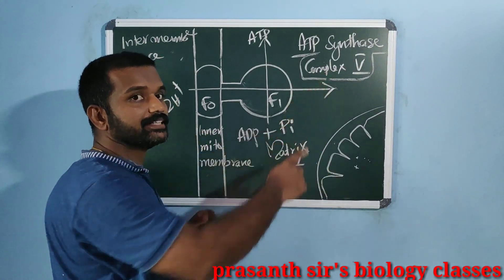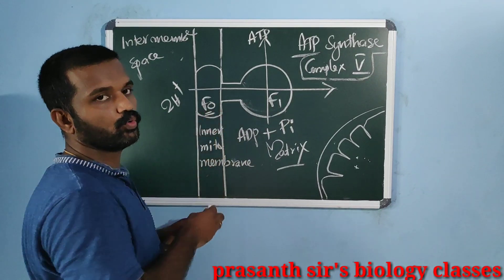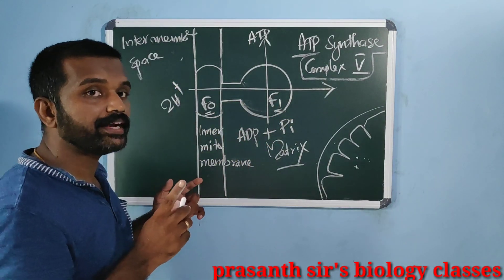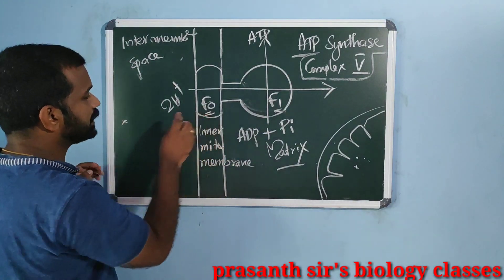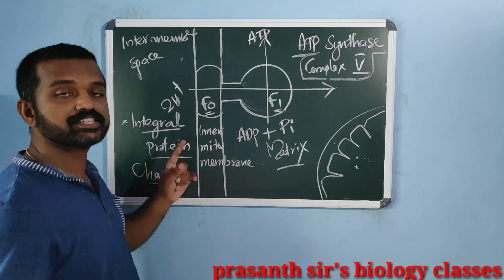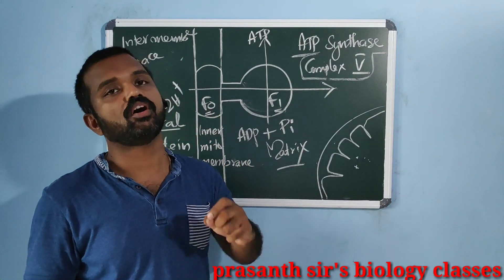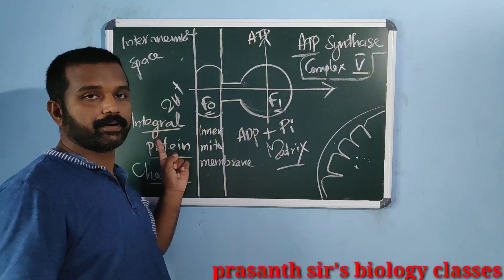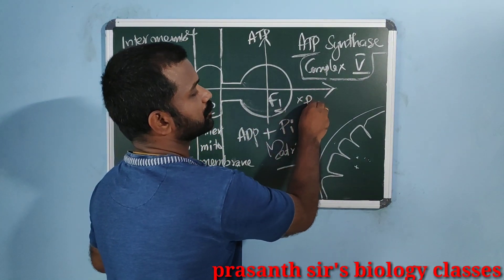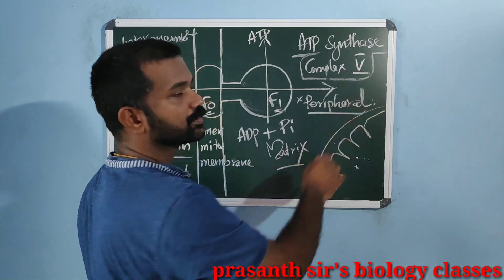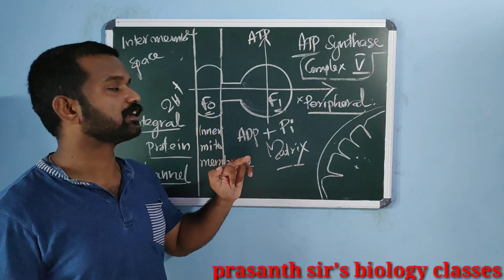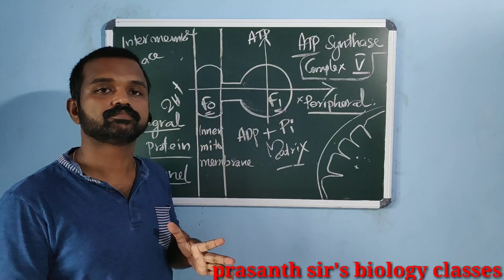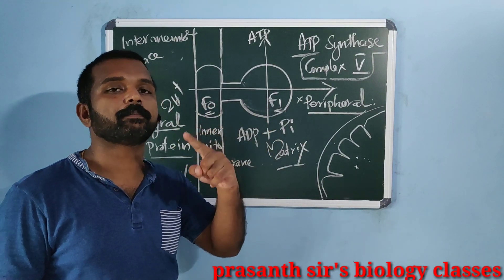In structure, complex 5 has 2 components: F0 and F1. F0 is the base portion and F1 is the headpiece. The F0 component is located within the inner mitochondrial membrane and is an integral membrane protein that has a proton channel, which allows facilitated diffusion of protons. F1 is a peripheral membrane protein located on the inner surface of the inner mitochondrial membrane, towards the matrix. F1 is the catalytic part of the enzyme, while F0 acts as the proton channel.